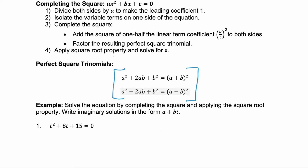There are 4 steps we're going to follow in order to complete the square. The most important step is step 1: make sure that A, your leading coefficient, is 1. It has to be 1 in order to complete the square. Look at our first example — the leading coefficient is 1. Step 2 is to isolate your variable terms; in other words, take your constant, which is 15 here, and move it to the other side by subtracting 15 from both sides. That gives us t squared plus 8t equals negative 15.